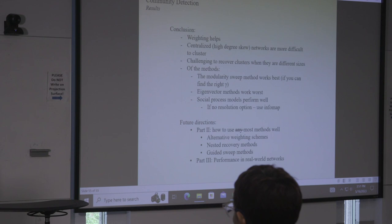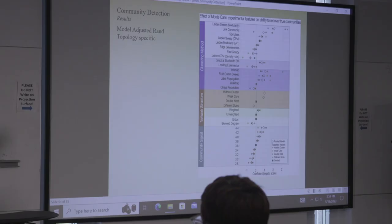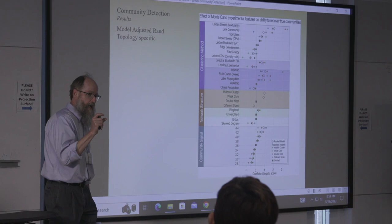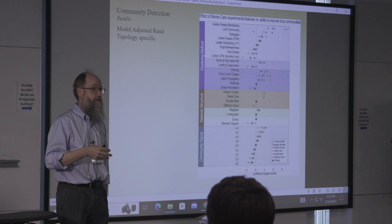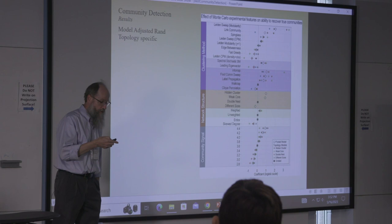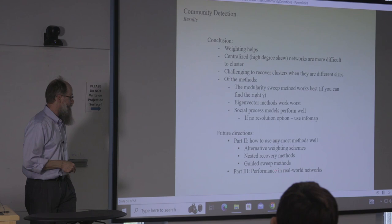The next two parts of this project: the weighted-edge result is easy to overlook — we weighted edges simply by reciprocity. Any theoretically community-enhancing feature like reciprocity, transitivity, or homophily should weight the graph and increase signal to noise. The next part of the paper will examine alternative weighting schemes, explicitly nested recovery schemes where you first get the big structure then look within it, and guided sweep methods.